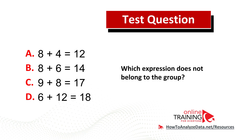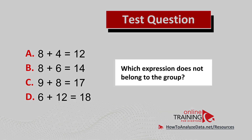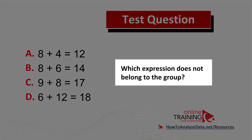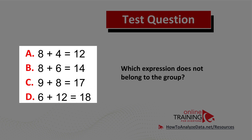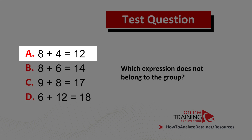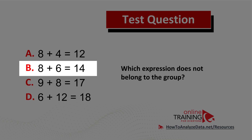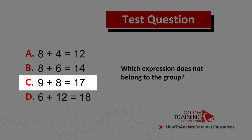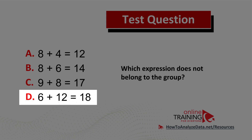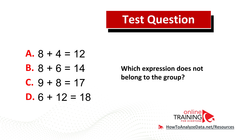Are you ready for this challenging problem? Let's look at a very interesting and tricky question you might frequently see on the test. Which expression does not belong to the group? You have four different expressions: Choice A, 8 plus 4 equals 12. Choice B, 8 plus 6 equals 14. Choice C, 9 plus 8 equals 17. And choice D, 6 plus 12 equals 18. Do you think you know the answer? Pause the video to see if you can come up with the answer on your own.